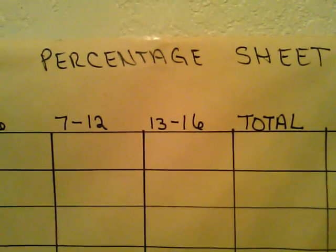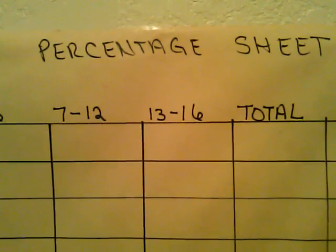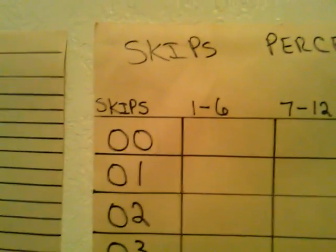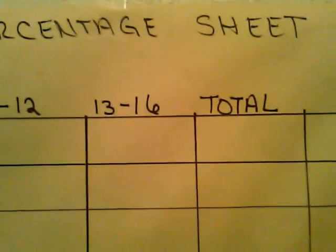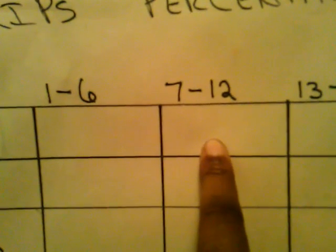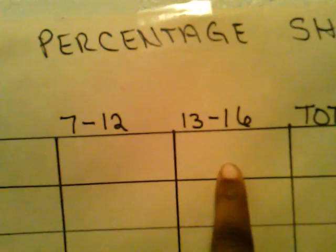This is the percentage sheet. The first step in creating the percentage sheet is to make five columns. The first column you're going to list your skips, second column label it one to six, third column seven to twelve, fourth column thirteen to sixteen, and the last column is total. The first column, as I said, is the skips — you're going to number it zero to thirty.